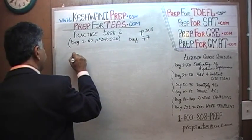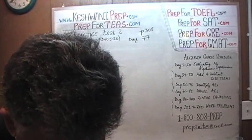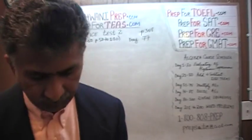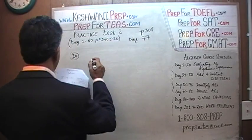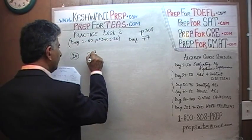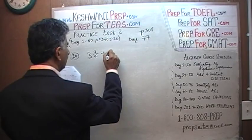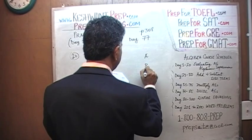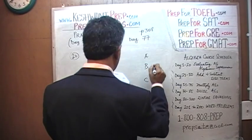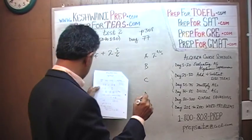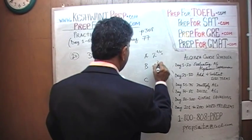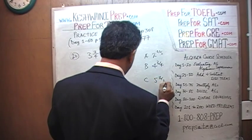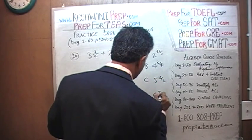Number 20. Number 20 is asking us to add up two mixed fractions: 3 and three-quarters plus 2 and five-sixths. The answer choices are: A) 2 and one-fifth, B) 4 and three-quarters, C) 5 and a half, and D) 6 and seven-twelfths.